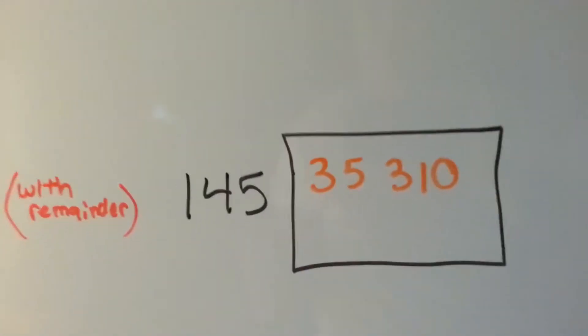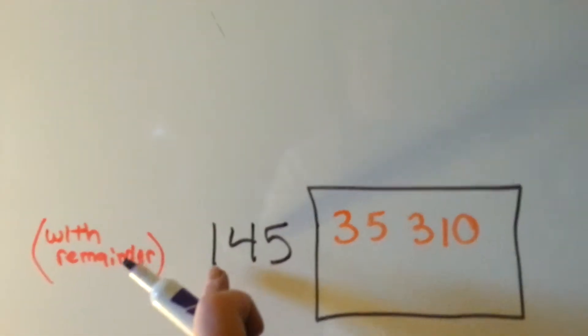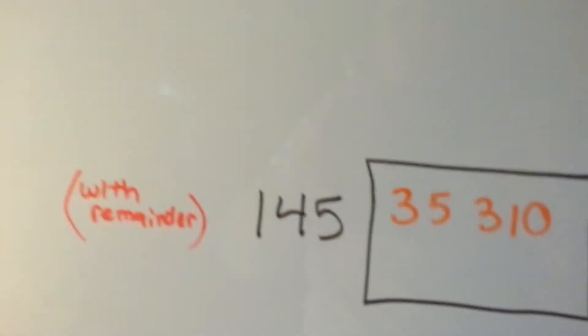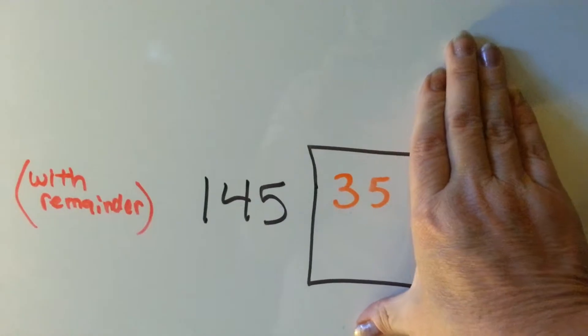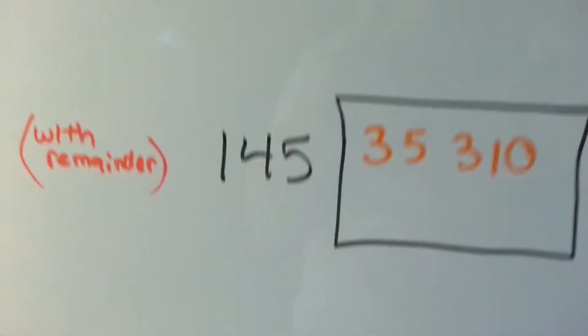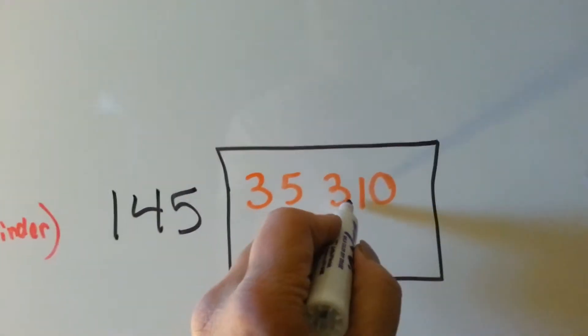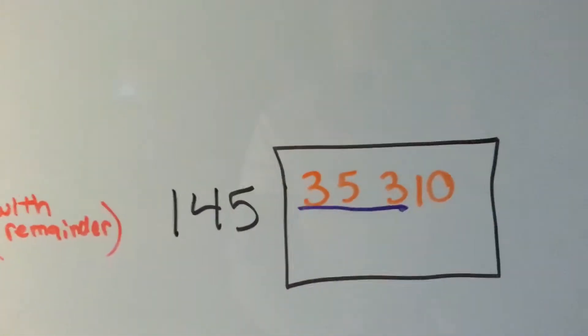So, the first thing we're going to do is ask ourselves, how many times can 145 go into 3? Oh, it can't. 35? Nope. Can it go into 353? It certainly can. So, I'm going to draw a line here, because that's the number we're going to be going into.